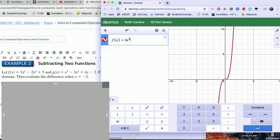Minus 2x squared plus 5. Then I'm going to do my g(x).